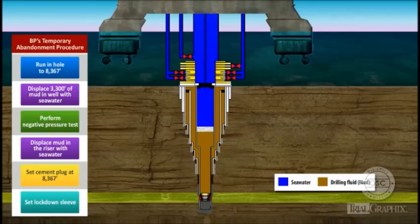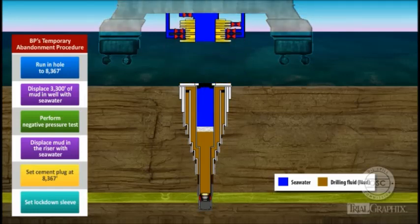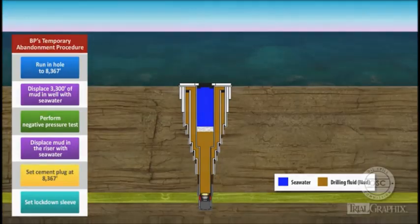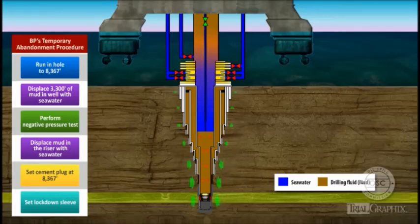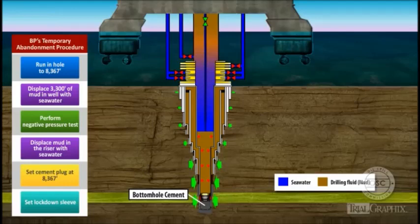BP's chosen Temporary Abandonment procedure had several important consequences. First, by removing so much mud, BP's procedure severely underbalanced hydrostatic pressures in the well. That underbalance would put significant stress on the bottom hole cement job.